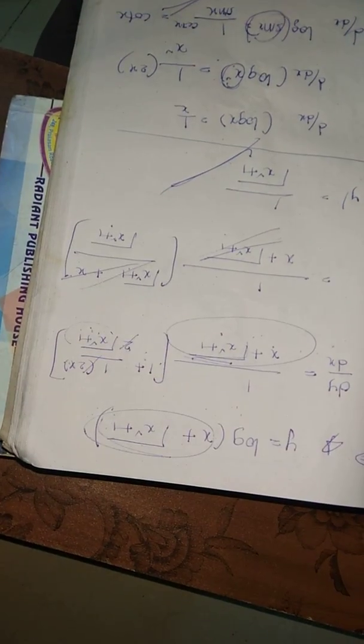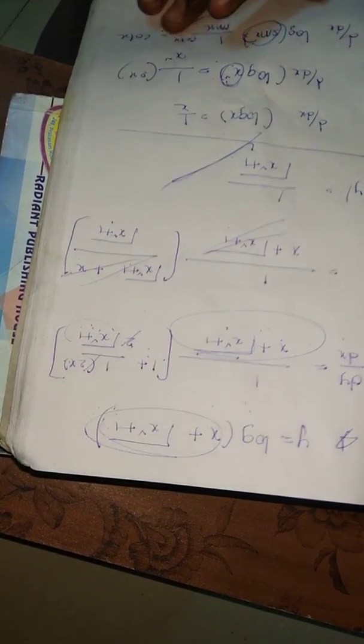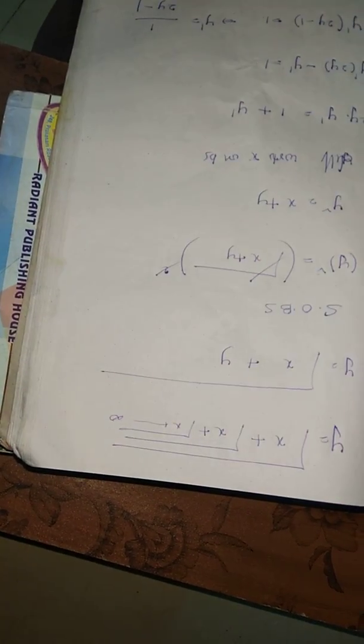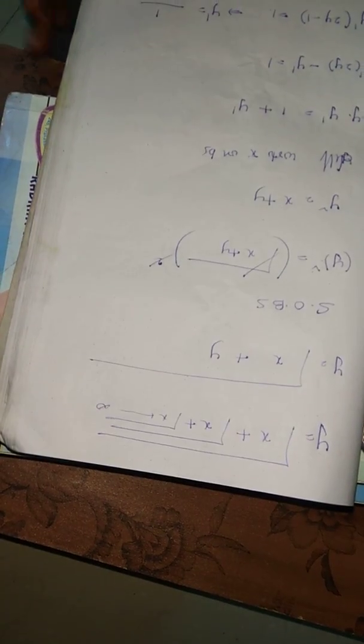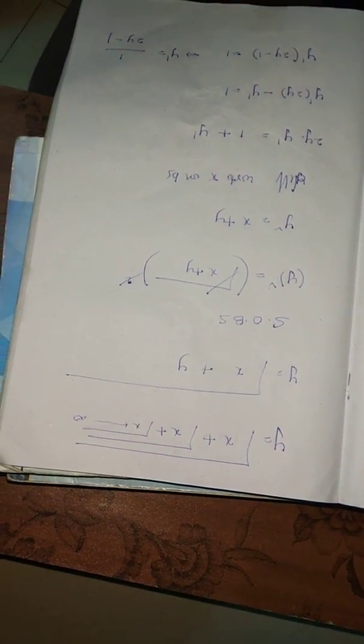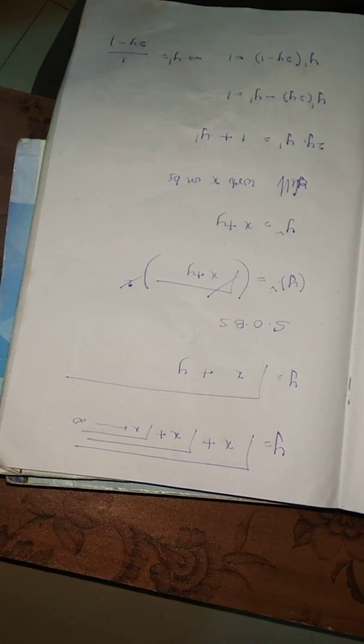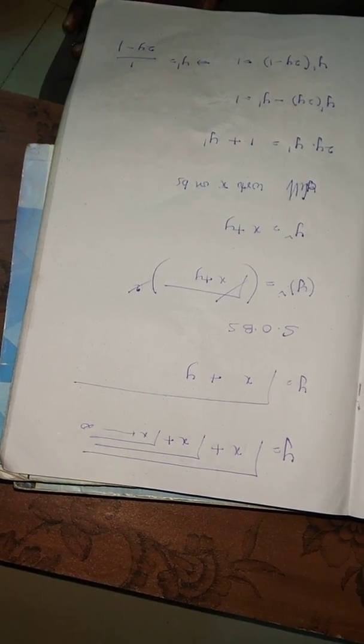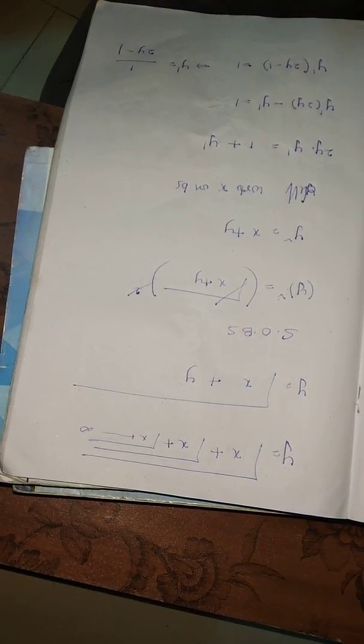This problem is very important. This is a very important and frequently asked examiner-favorite question. The question type involves nested radicals: root of root of root — something like x to a power, repeated. It is very simple logic.